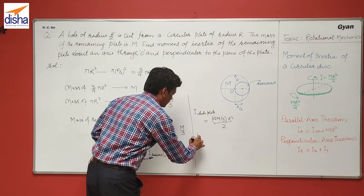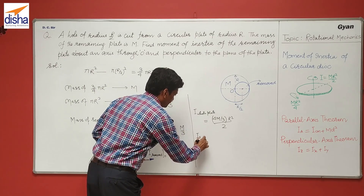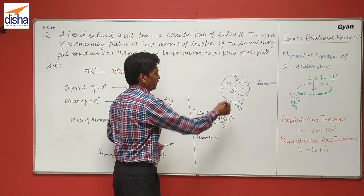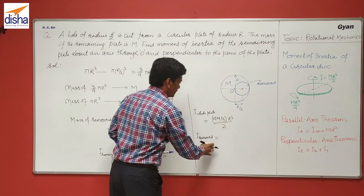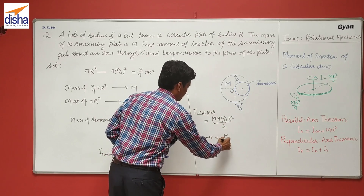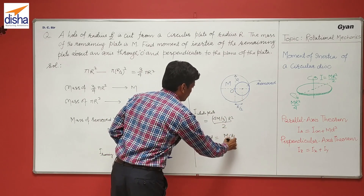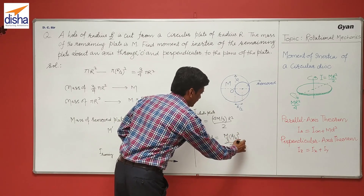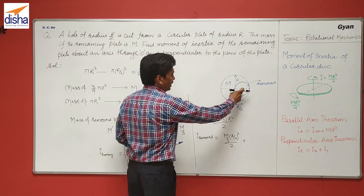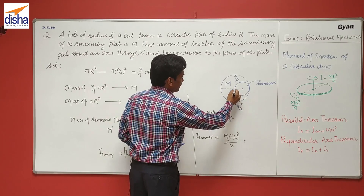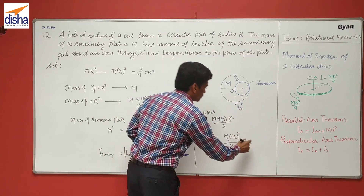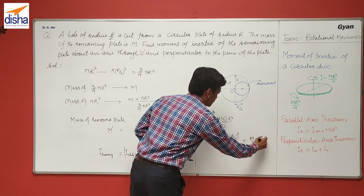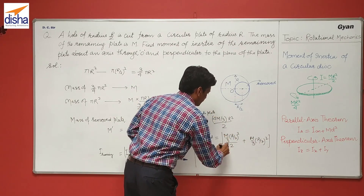The moment of inertia of the removed plate: first we find it about its own center of mass, which is (M/3)(R/2)² / 2. Then, using the parallel axis theorem, we add (M/3)(R/2)² to shift to axis O, since the distance between the two axes is R/2.